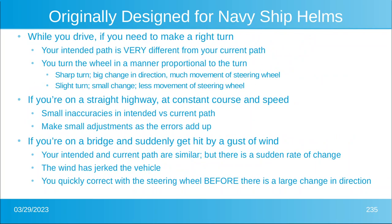PID was originally designed for autopilots, specifically for the autopilots on navy ships. But let's pretend that instead of a navy ship, we're just driving a car. While you drive, if you need to make a right turn, your intended path is very different from your current path — because you haven't started turning right yet. So you turn the wheel in a manner proportional to the turn. A sharp turn means you need a big change in direction, so you do a lot of movement to the steering wheel. If it's just a slight turn, that's a small change in direction, and you do a smaller movement of the steering wheel.